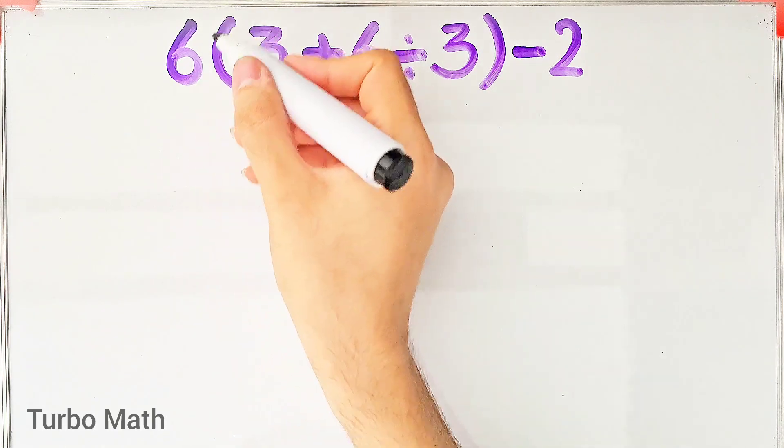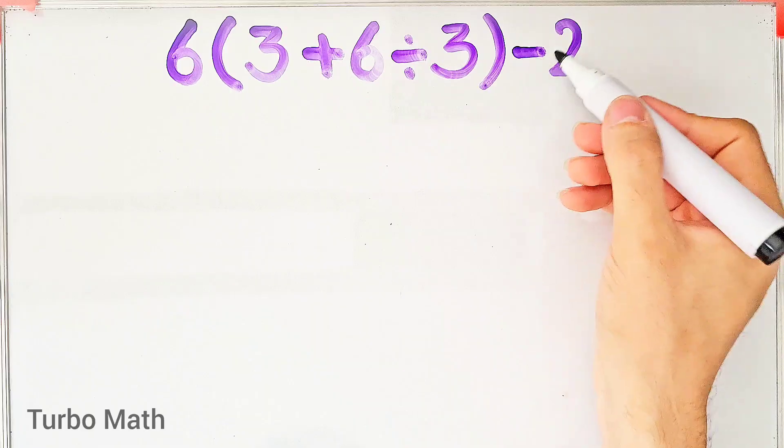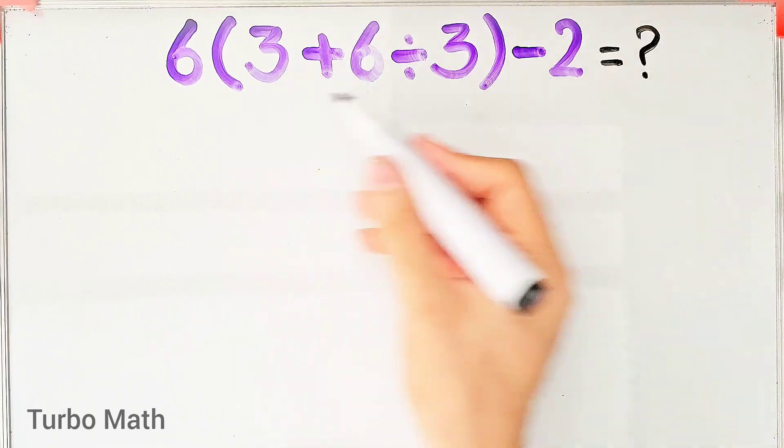6 times open parenthesis 3 plus 6 then divided by 3 close parenthesis minus 2. What is the answer of this question? Can you solve it?